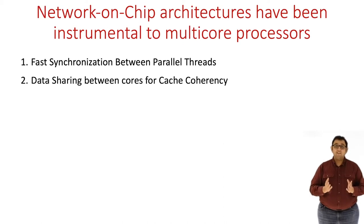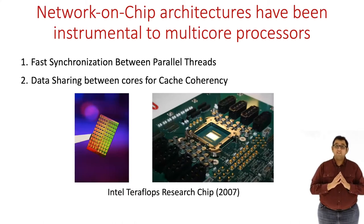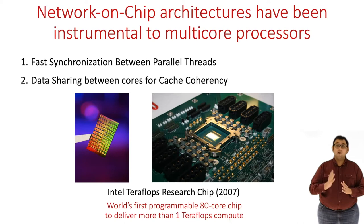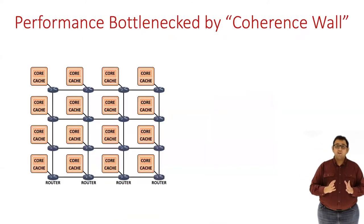In fact, network on chip was touted as one of the key innovations in the Teraflops research project, where Intel built the world's first programmable processor that could deliver supercomputer-like performance. However, as the number of cores scales to the hundreds and thousands, we run into the coherency wall problem.